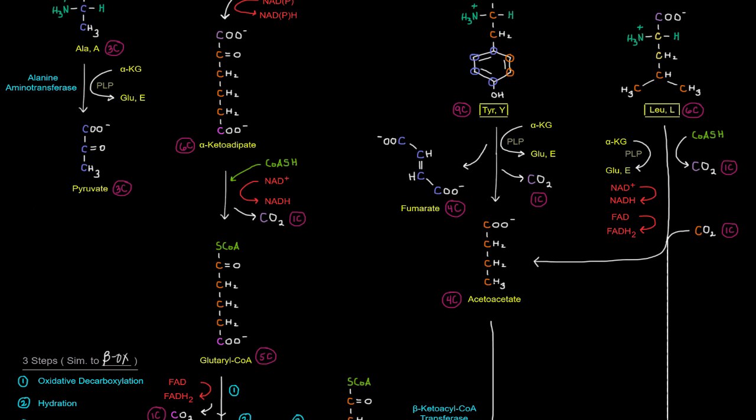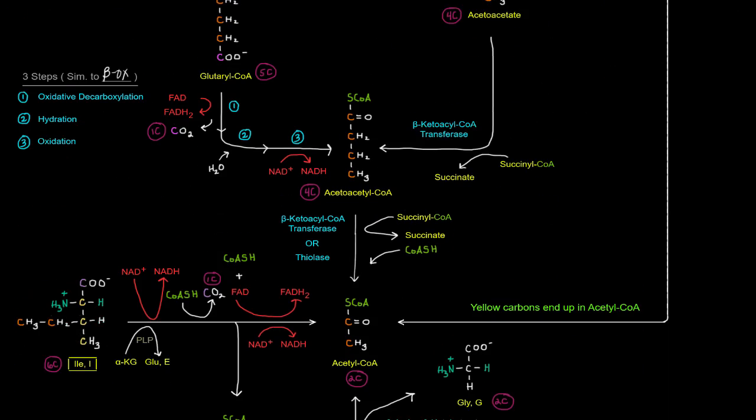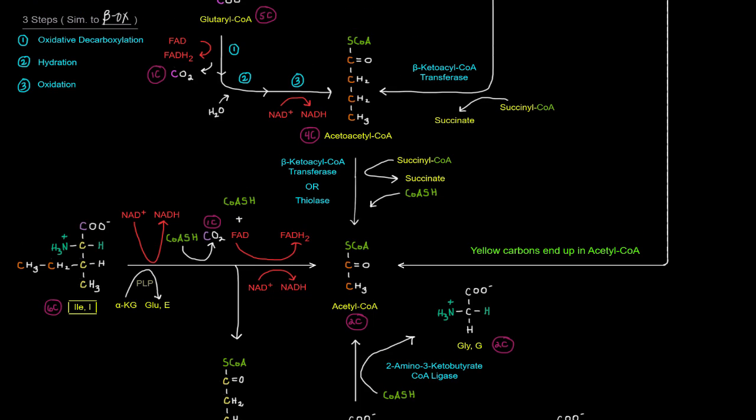We get this acetoacetate and that acetoacetate can get turned into acetyl-CoA by basically just adding a coenzyme A in this beta-ketoacyl-CoA transferase reaction to give acetoacetyl-CoA right here. Now that acetoacetyl-CoA, of course, can give acetyl-CoA basically just cleaving that acetoacetyl-CoA into two acetyl-CoAs.